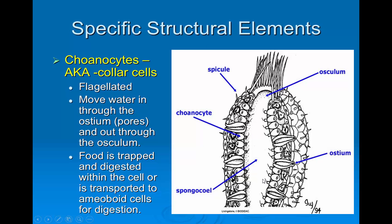On the inside lining of the sponge you see cells that look just like choanoflagellates — those are choanocytes, or collar cells, and they have flagella on them. They move water through the ostia, which are the pores, into the spongocoel, and it exits through the opening at the top called the osculum. Any food present is trapped and digested within the cell, or passed to the amoeboid cells for digestion.